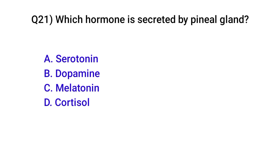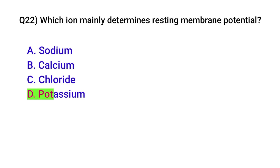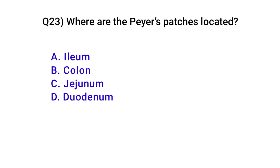Question number twenty-two: Which ion mainly determines resting membrane potential? Correct option is: Potassium. Question number twenty-three: Where is the Peyer's patch located? Correct option is A: Ileum.